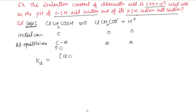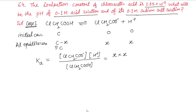The ionization constant Ka equals the concentration of H⁺ times concentration of chloroacetate divided by concentration of chloroacetic acid, which gives x² divided by c. We take c minus x as c because x is very small compared to c, since Ka is a small value. If Ka is less than 5%, always neglect x compared to c.